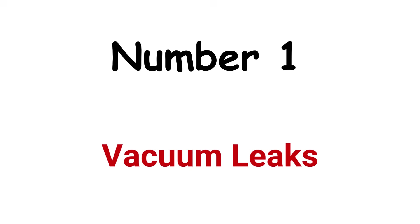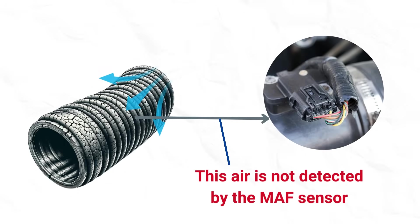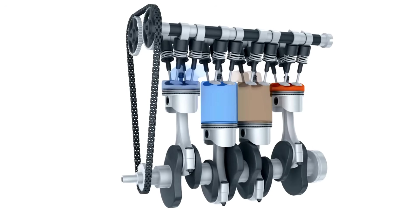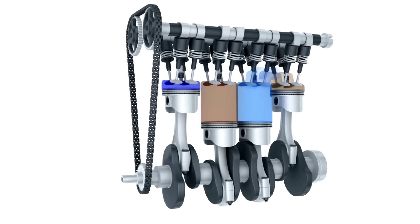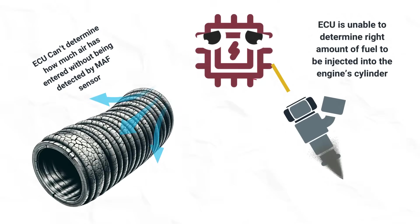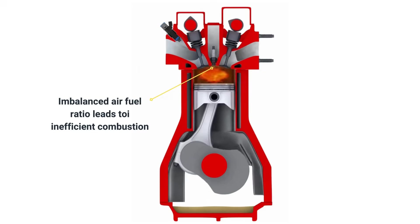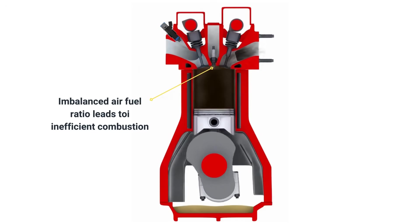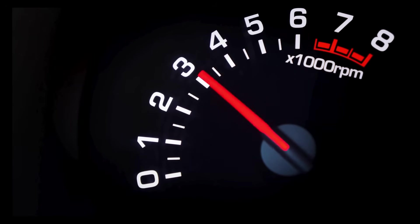Cause #1: Vacuum leaks. If air gets into the engine without being measured by the MAF sensor, it is termed a vacuum leak. Your engine relies on a precise balance of air and fuel to run smoothly. The ECU adjusts the amount of fuel based on air entering the engine. If air enters without being detected, the ECU can't determine the correct amount of fuel to inject, and the imbalanced air-fuel ratio results in inefficient combustion, causing RPMs to go haywire.